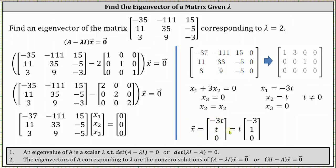This can be written as t times the vector (-3, 1, 0). So all eigenvectors corresponding to λ = 2 are scalar multiples of (-3, 1, 0), except the zero vector.